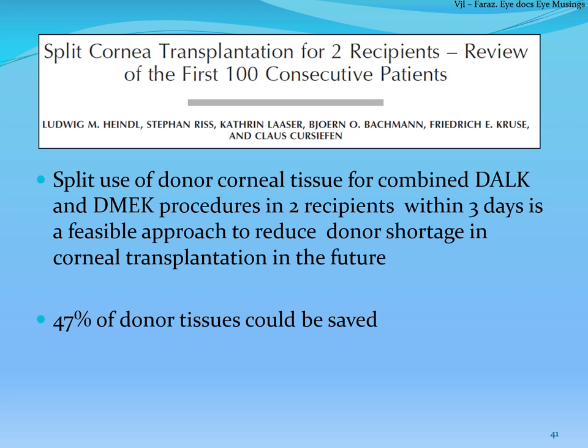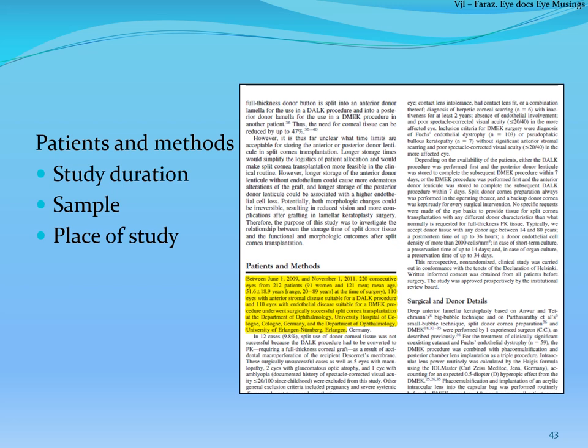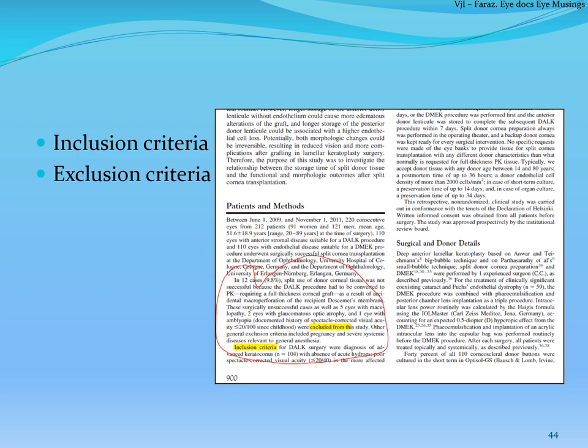Next, mention the study purpose or aim, which is usually given at the end of the introduction or beginning of patients and methods. Put a slide mentioning the study design and setting, and also mention any ethical committee approvals or financial disclosures. Then put a slide on study duration, sample size, place of the study, and how the sample was selected if any specific selection process was used.